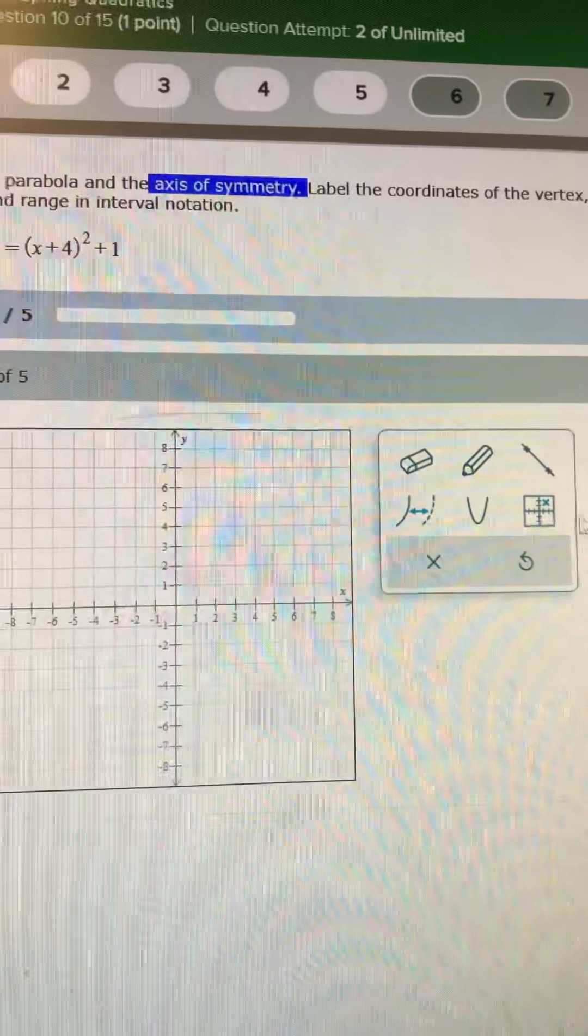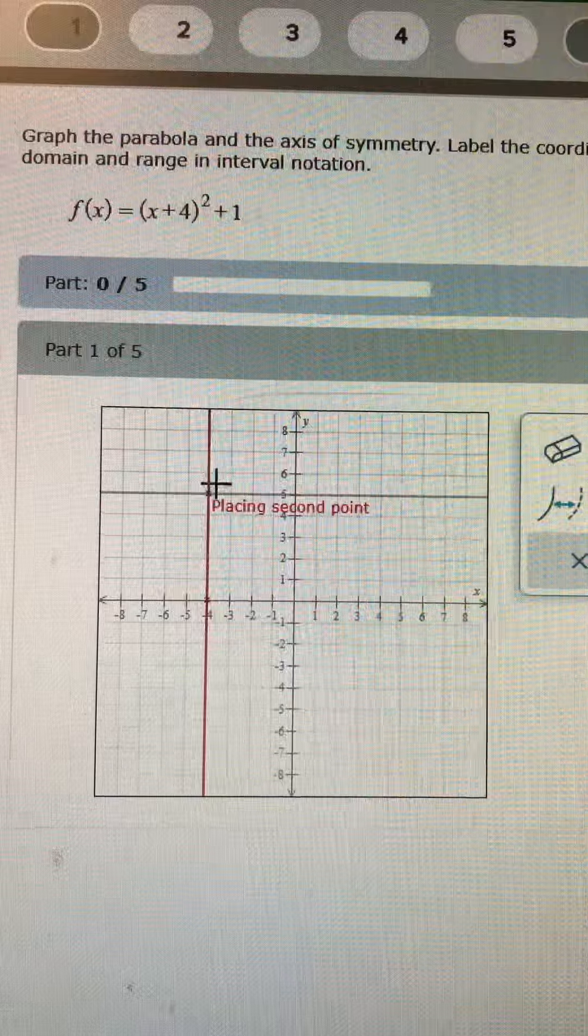To graph the parabola, it says you need the axis of symmetry, so you're going to pick up the line tool and it's going to cross at x equals negative 4 and anywhere on that vertical path.